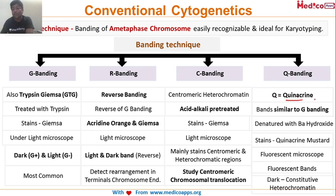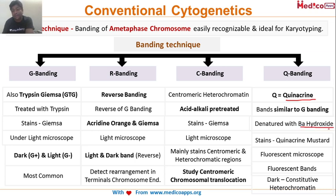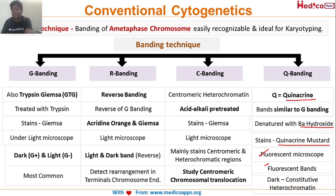The fourth technique is Q banding. Q stands for quinacrine. It is similar to G banding but all three components are different: the treating agent is barium hydroxide, the stain is quinacrine mustard, and it is viewed under a fluorescent microscope. Dark fluorescent bands correspond to constitutive heterochromatin.